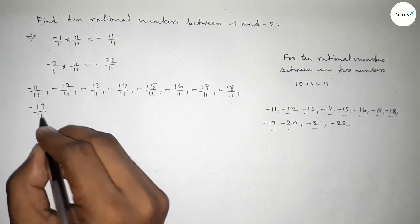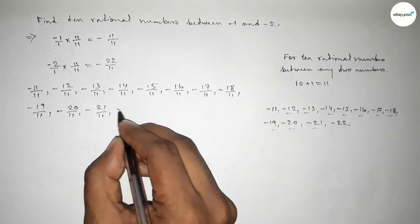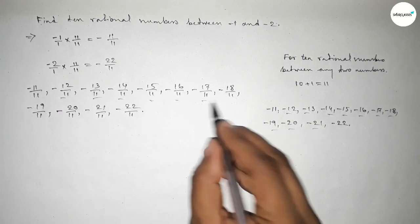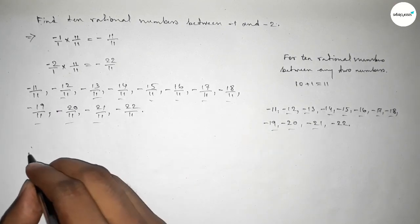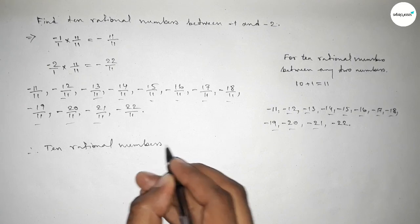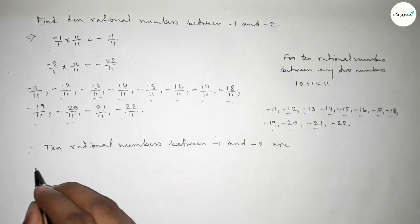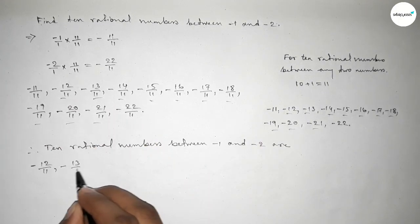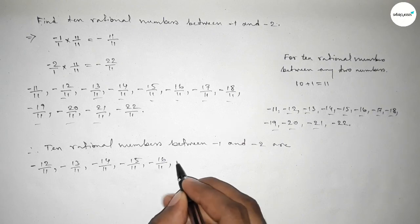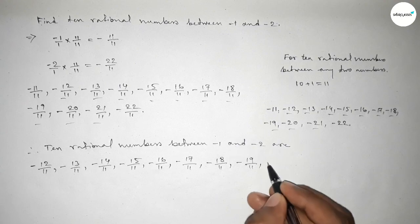So these are the required 10 rational numbers between minus 1 and minus 2. Therefore, the 10 required rational numbers between minus 1 and minus 2 are: minus 12 over 11, minus 13 over 11, minus 14 over 11, minus 15 over 11, and so on up to minus 21 over 11.